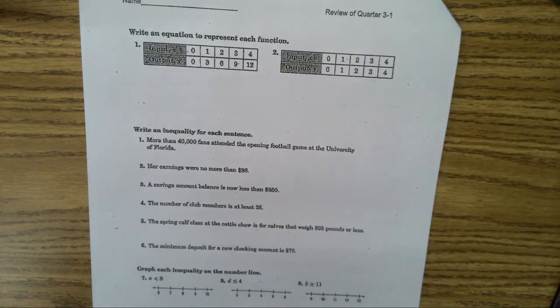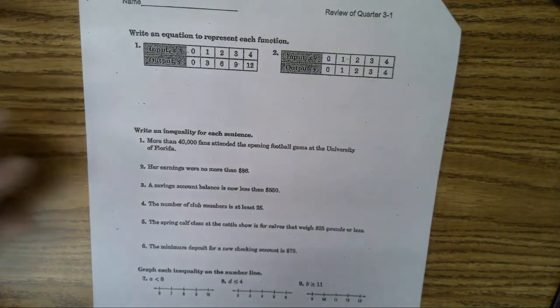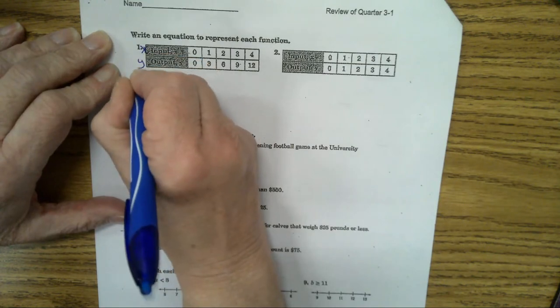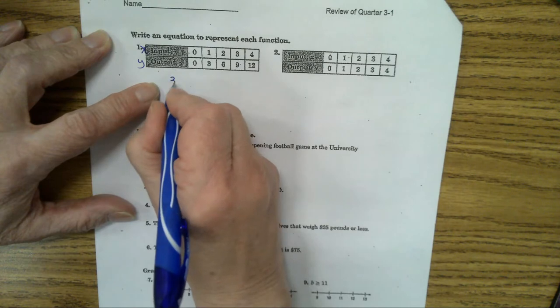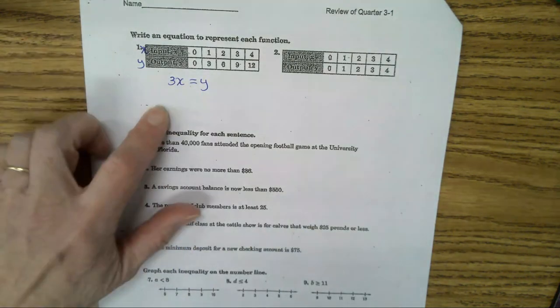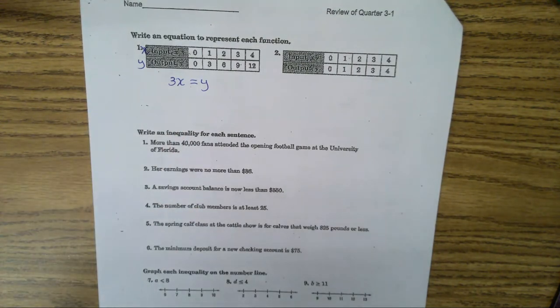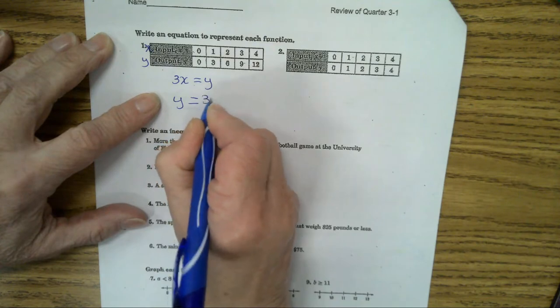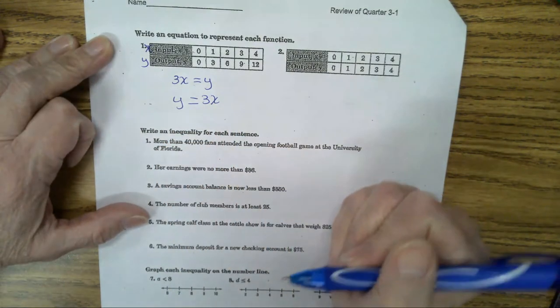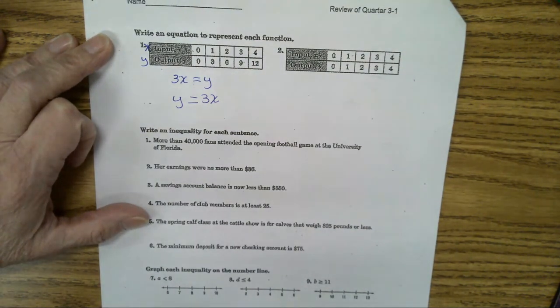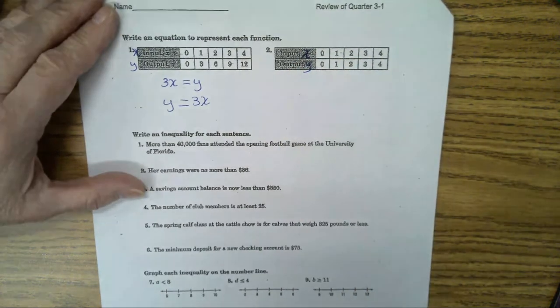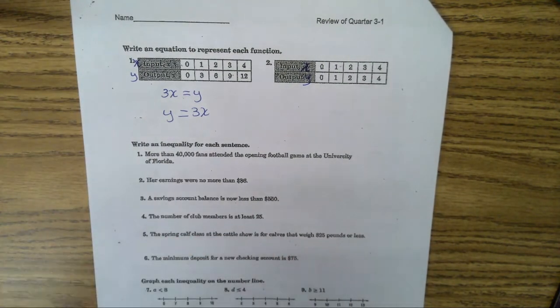Now on this page, what we have here, write an equation to represent. We did these earlier, didn't we? Here we said the input is x. Output is y. And we said it was 3 times x equals y. Could someone give me another way to write this? What's another way I could write that instead of 3x equals y? Y equals x times 3. Y equals x times 3 or y equals 3x. Both of those would be considered correct. Did you have that written down? You should have had that written down because we went over these.